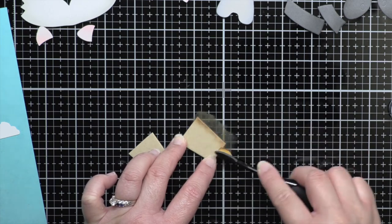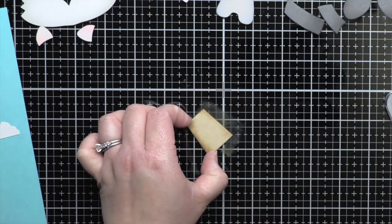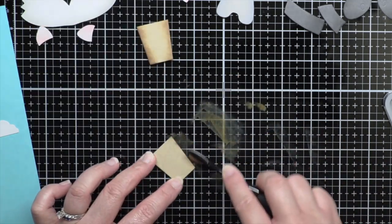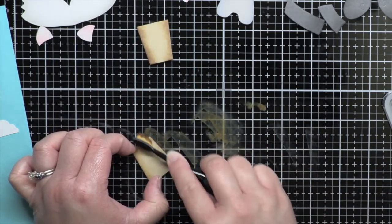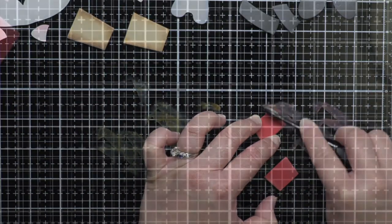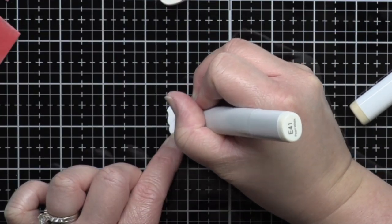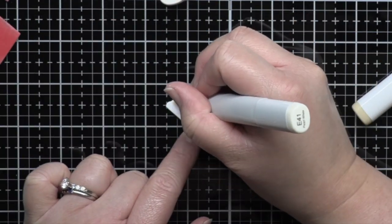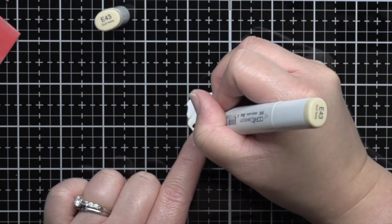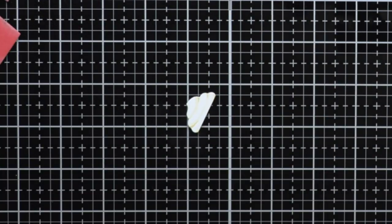Next, I blended a little Vintage Photo to the coffee cups and Aged Mahogany to the coffee cup sleeves. Finally, I used Copic Markers to add accents to the whipped cream and coffee cup lid. I used E41, E43, T0, and T2.